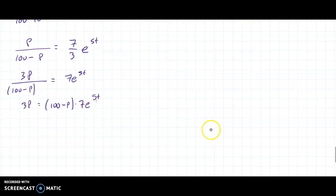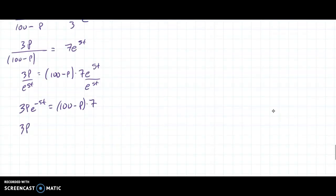From there, I'm going to distribute 3P is equal to, all right, I have 700e. Actually, you know what I'm going to do here? This is a little bit different from the way I taught it in the most recent video. I'm going to divide by e^(5t) here and divide by e^(5t) here. And then that gives me 3Pe^(-5t) = (100 - P) times 7. And that just will make it a little bit easier to solve here. So I get 3P times e^(-5t) = 700 - 7P.